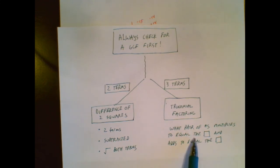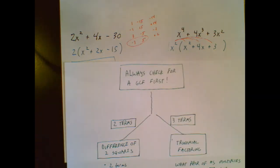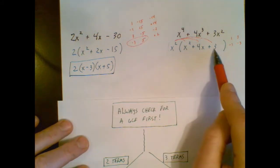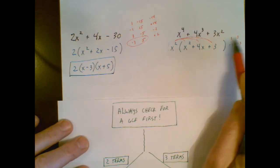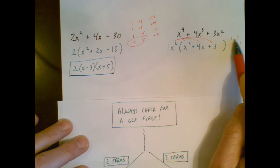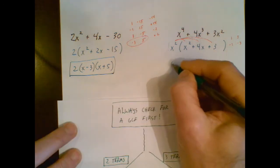What pair of numbers multiplies to equal the constant term and adds to equal the middle term? In this case, it's a pretty small list. 1 and 3 multiply to positive 3, but so does negative 1 and negative 3. It's easy to forget about the negatives. It's easy to forget about the negatives in a case like this. If you would have forgotten about the negatives, you would have gotten away with it in this case because this is the pair that multiplies to 3 and it adds to positive 4.